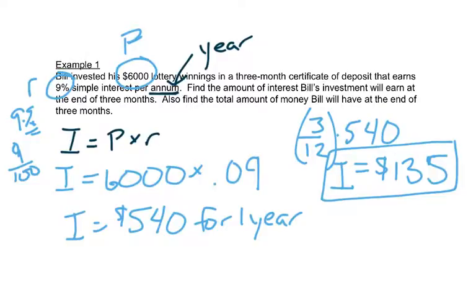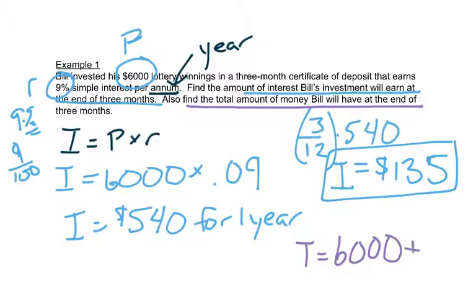That's the first part of this. The first part says find the interest he'll earn at the end of three months. Now the next part says find the total amount. So the total amount is the amount that he started with, the principal, plus this interest. The interest is extra on top of the principal. So his total amount is $6,135.